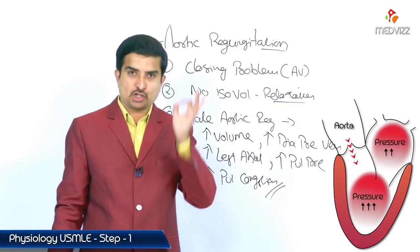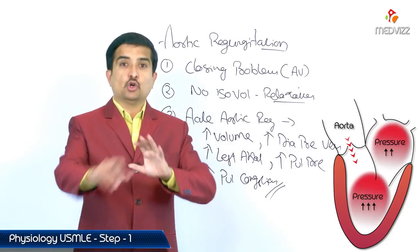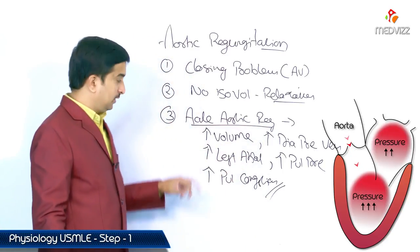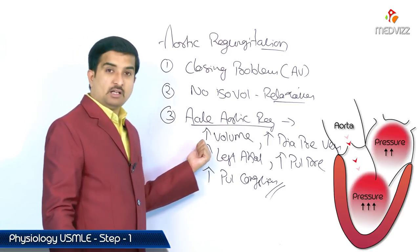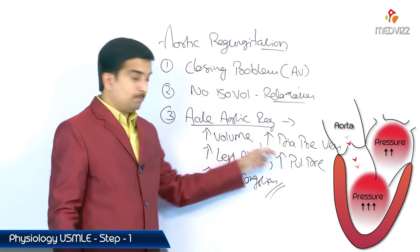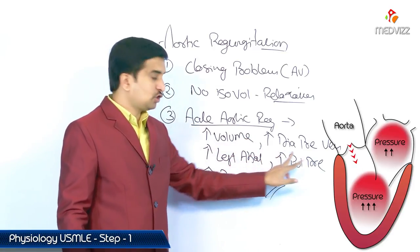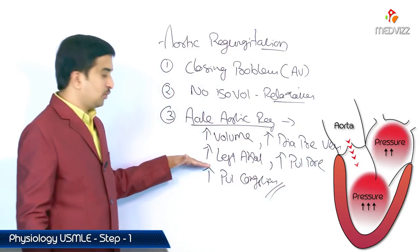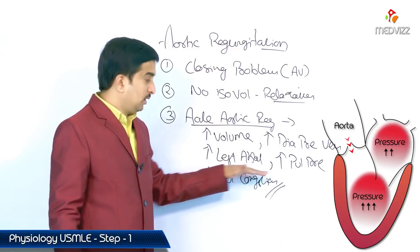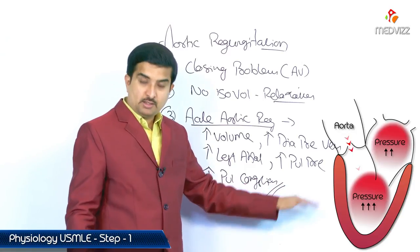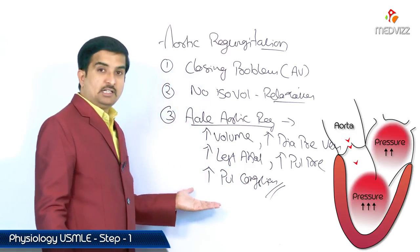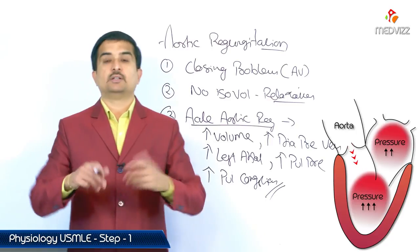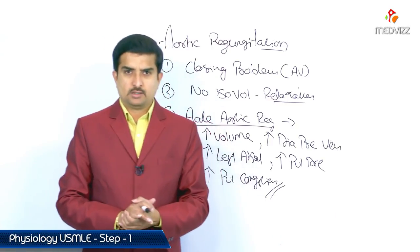To summarize acute aortic regurgitation: the left ventricular muscle size is normal with no increase in mass. There is an increase in left ventricular volume from regurgitated blood, leading to increased diastolic pressure, increased left atrial volume and pressure, increased pulmonary capillary wedge pressure, pulmonary congestion and edema — hence it is a medical emergency.